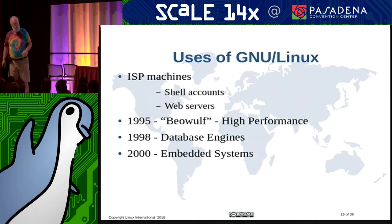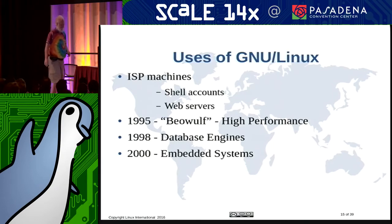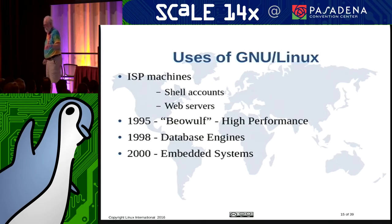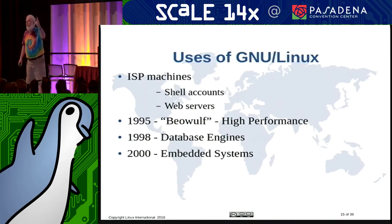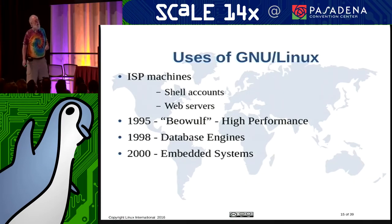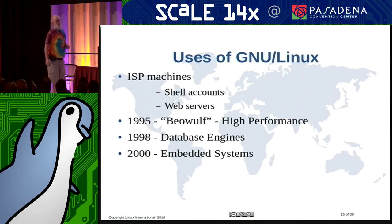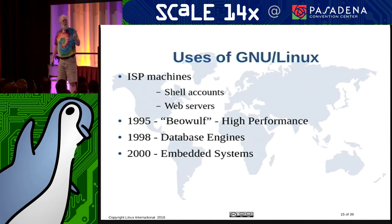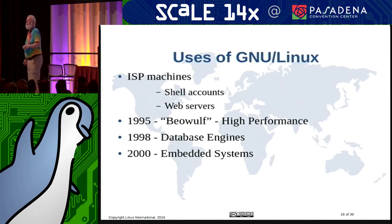There was a very famous worm called the Morris worm. Digital Equipment Corporation, after understanding the problem, took two weeks to generate, test, and distribute the patch to customers for a system we still supported — and three months for an older unsupported system that we almost didn't patch at all. The free software community had the source code patch up on the web within four hours of understanding the problem.